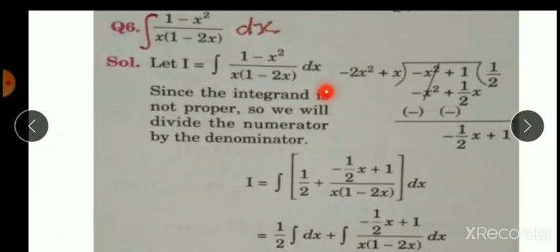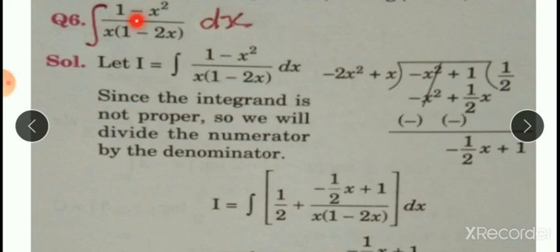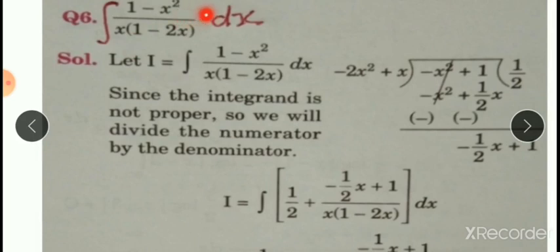Now see question number 6. Integrate (1-x²) upon x(1-2x). The denominator contains two linear factors: x and (1-2x). But when we observe this, the numerator contains x², and the denominator also contains x times 2x, meaning x squared — degree 2. Both numerator and denominator have the same degree 2. In integration, the numerator must always have less degree than the denominator. So we need to do division.